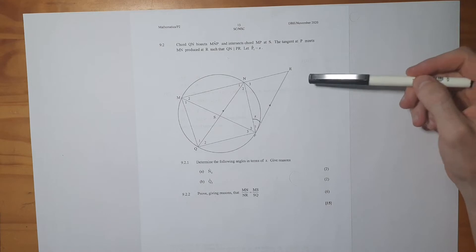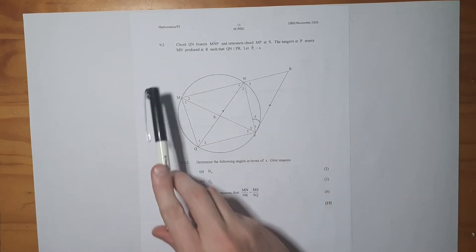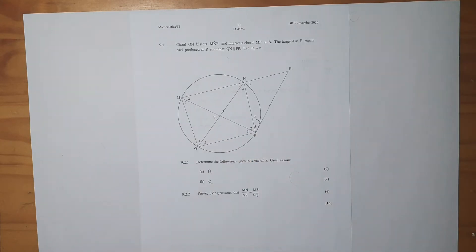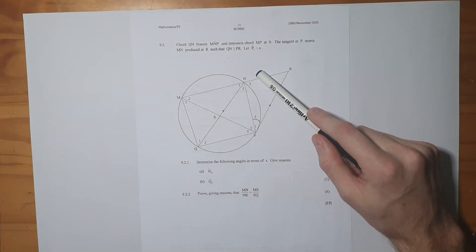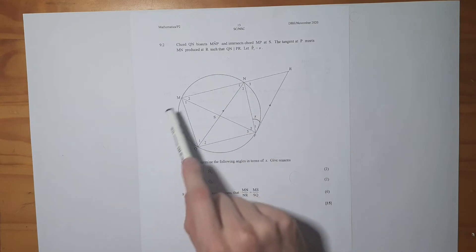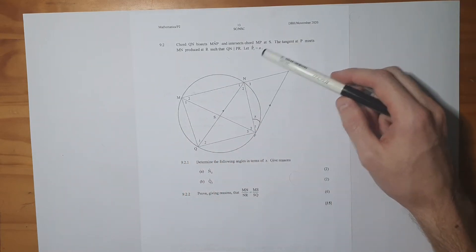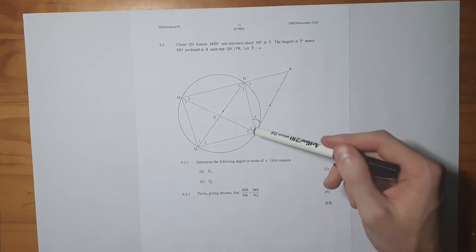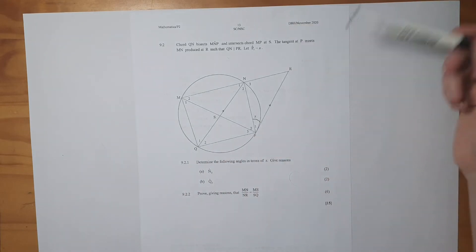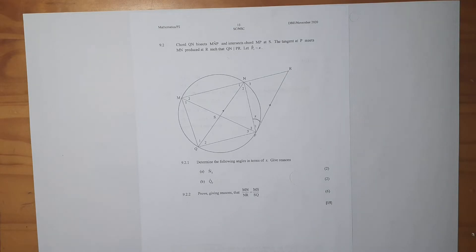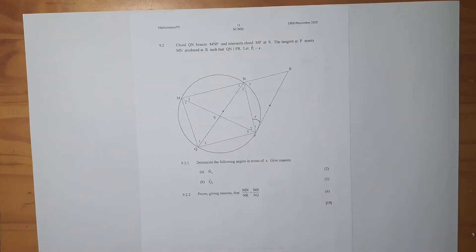So 9.2 is dealing with circular geometry still. At the top here it says the chord QN bisects MNP and intersects MP at S. Then they tell us that the tangent at P meets MN produced at R such that QN is parallel to PR. Then they also tell us that P1 is equal to X.